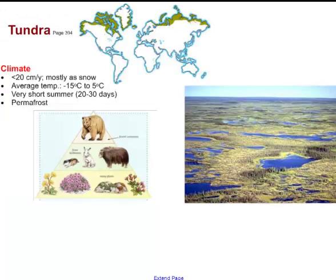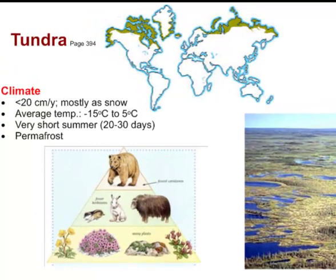The tundra is mostly located in the Arctic. It has a very small amount of precipitation — the ice and snow are there permanently and never melt. Average temperatures range from minus 15 to 5 degrees Celsius. The tundra has a very short summer, and the ground has permafrost, where only the very top surface thaws in spring. Plants and animals here are highly adapted to survive in this environment.